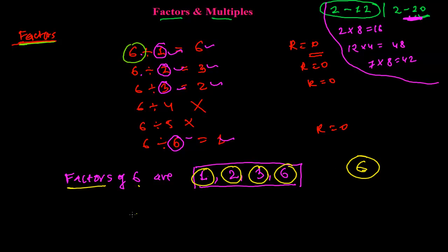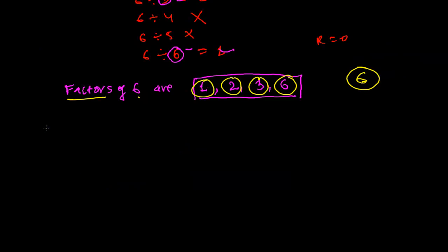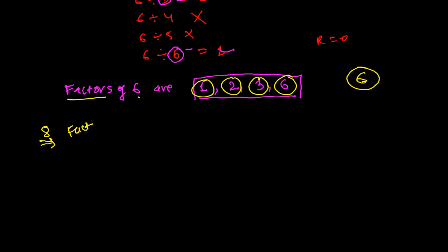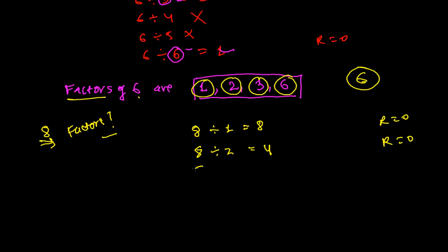Similarly, let's take another example: 8. What are the factors of 8? If you divide 8 by 1, you get 8 with remainder 0. If you divide 8 by 2, you get 4 with remainder 0. If you divide 8 by 3, you can't divide it exactly. If you divide 8 by 4, you get 2 with remainder 0.